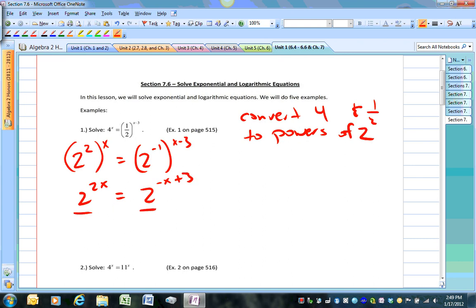And because these are the same, the bases are the same, the exponents are supposed to also be the same. Therefore, 2x equals negative x plus 3, 3x equals 3, x equals 1.